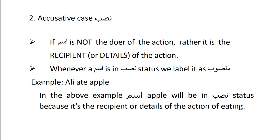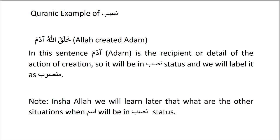Let's talk about the second form of I'rab: nasab or mansub — accusative case. If the ism is not the doer of the action, rather it is the recipient or details of the action, whenever an ism is in nasab state, we label it as mansub-un. Example: Ali ate apple. If you ask the question 'What did Ali eat?' the answer is apple — that is the object, maf'ul bihi, and it will appear in mansub state. In the Quranic example, Adam is the recipient of the action of creation, so it will be in nasab state and labelled as mansub-un.